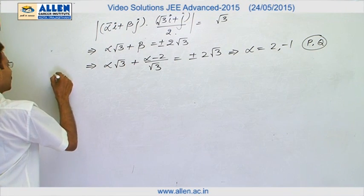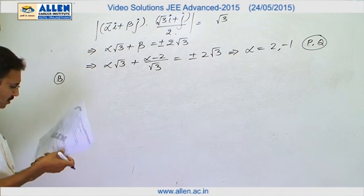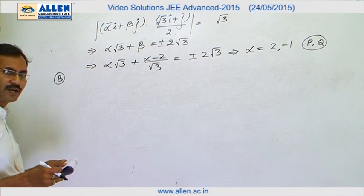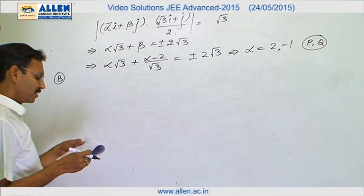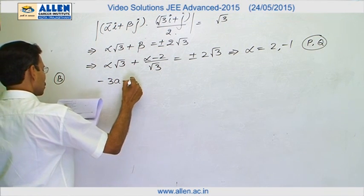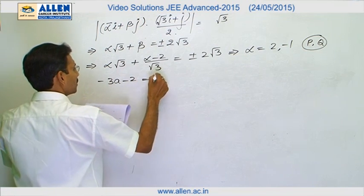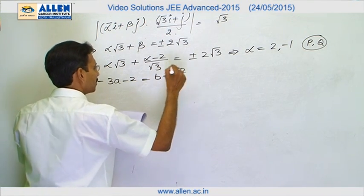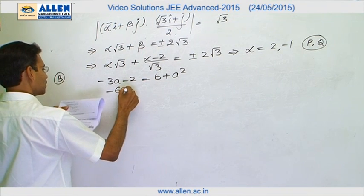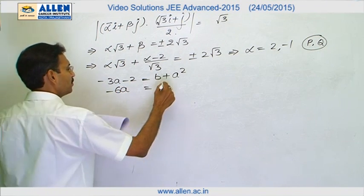For B part of the match column, there is a function which is given as differentiable. So it will be continuous also. We will take the left hand and right hand limit at 1. The left hand limit is minus 3A minus 2 and right hand limit is B plus A square. Now, LHD and RHD, the left hand derivative will be minus 6A and the right hand derivative will be B.